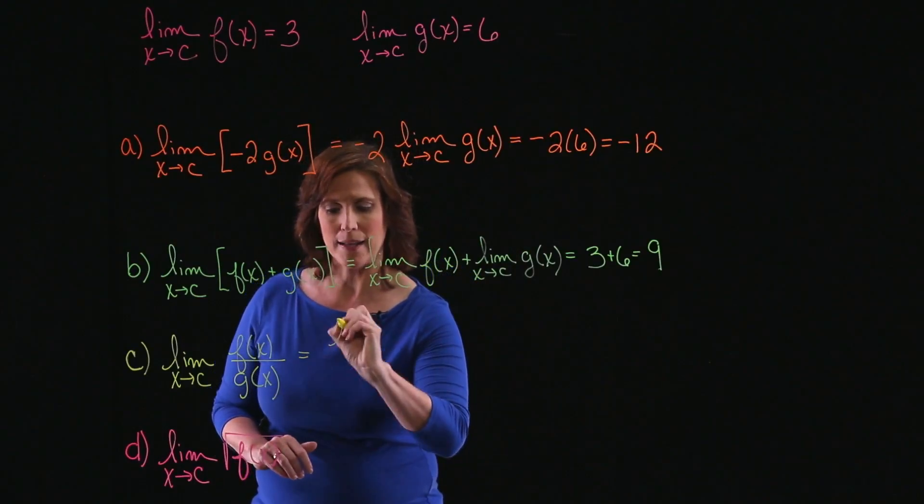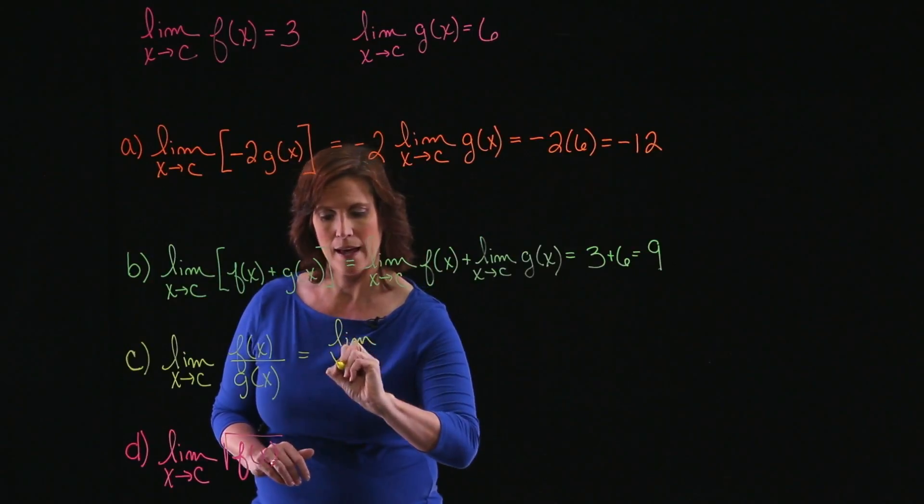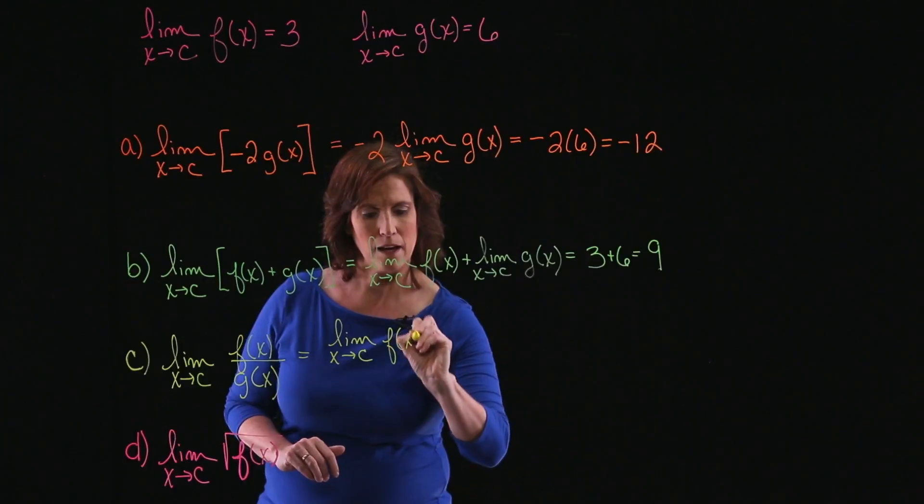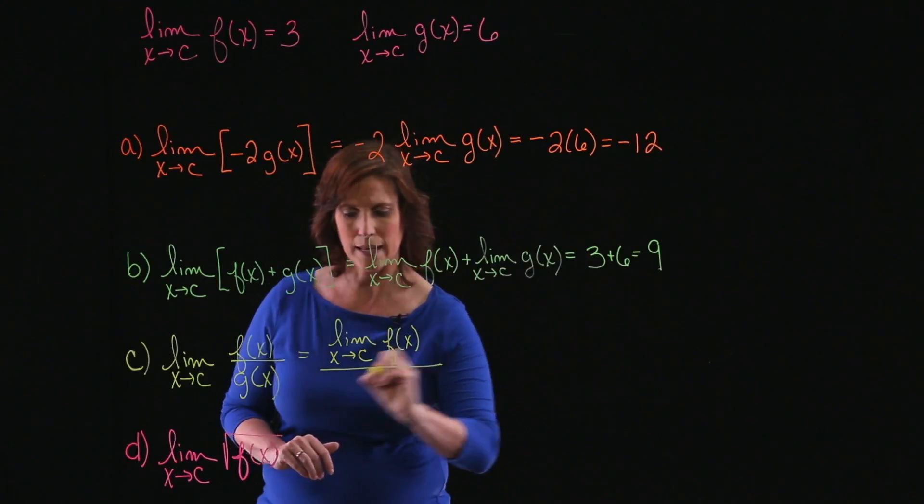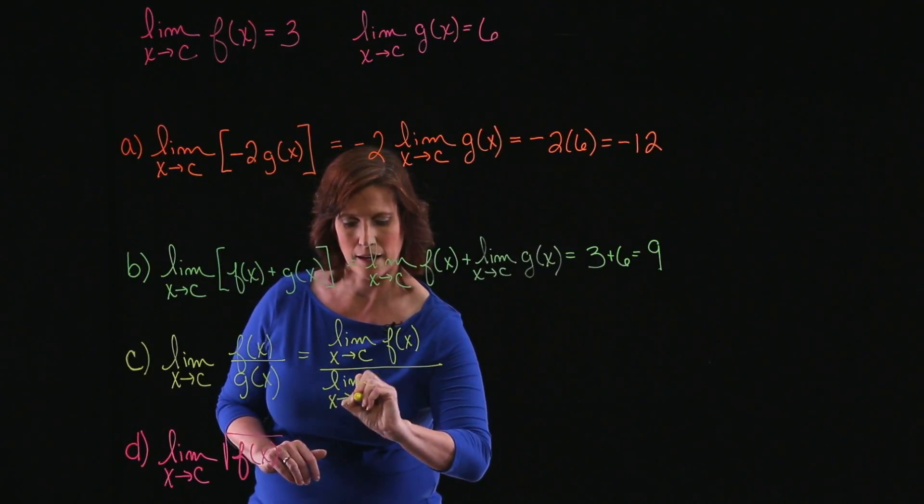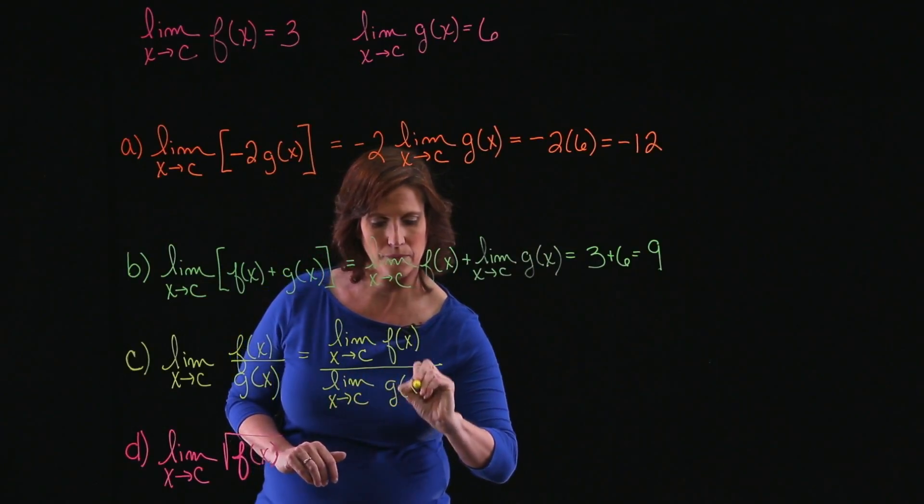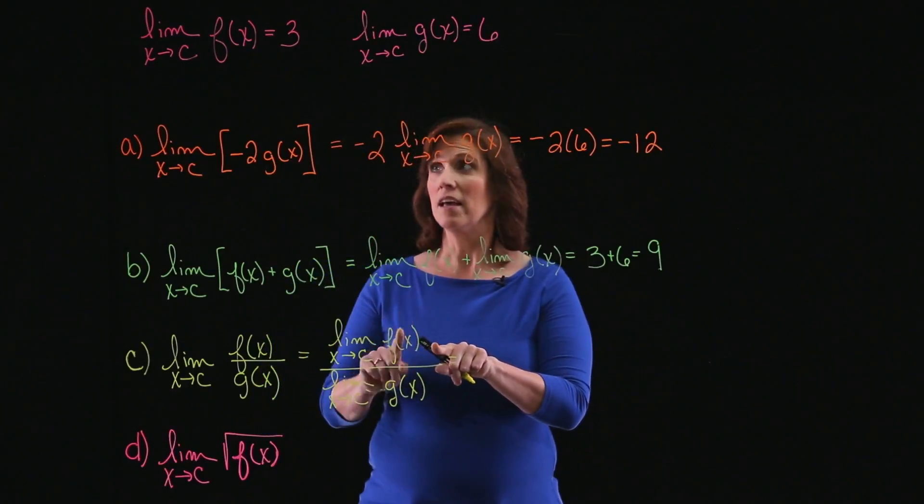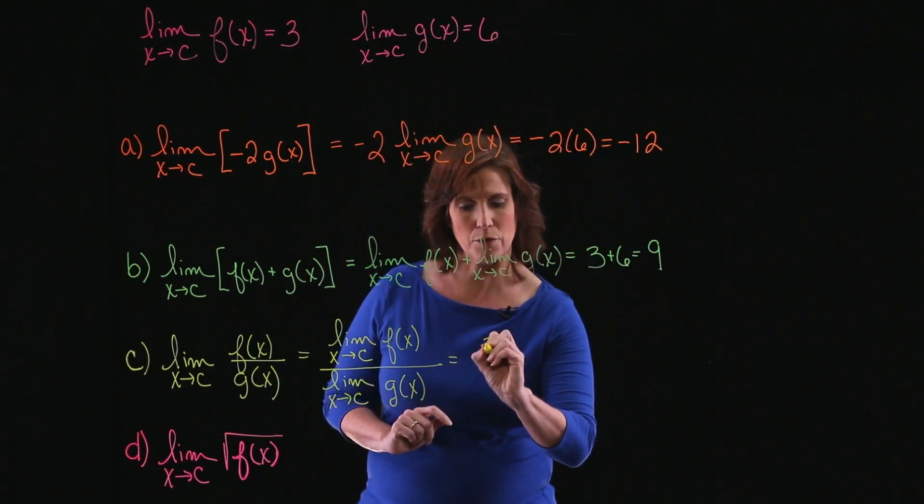So I'll begin by writing this as the limit as x approaches c of f of x all over the limit as x approaches c of g of x. Now, I know that as x approaches c,